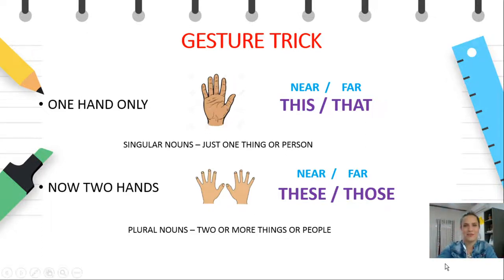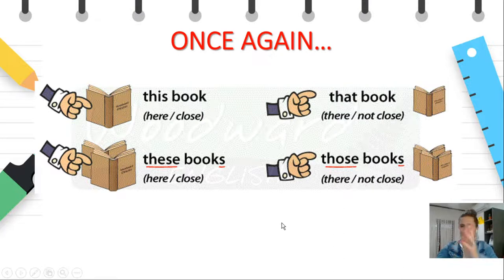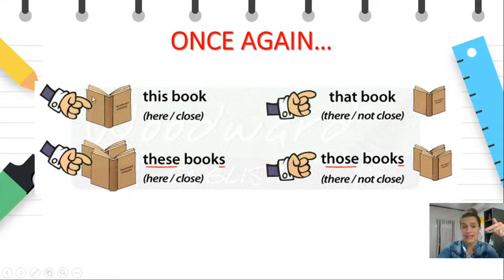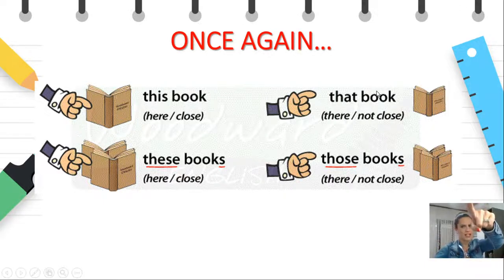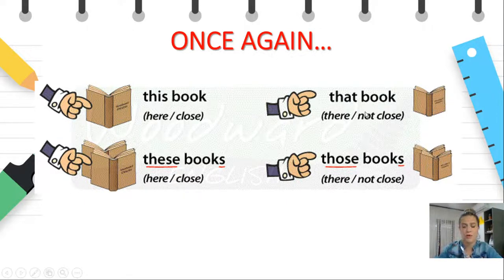I hope you like this trick. Let's revise once again. This hand is pointing really close — we say 'this book' here, close, or 'these two books' here, close. Or we say 'that book' there — it's not close, it's far — or 'those books,' again there, they're not close, they're far.